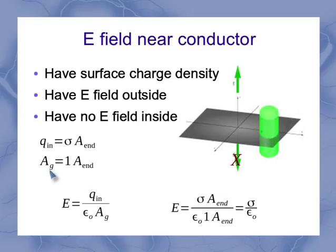But now my Gaussian area, well, before I had both the top and the bottom had electric flux going through it. Now only the top does. So where before, I had two times the area of the end cap, now I only have one times the area of the end cap. When I plug that into my Gauss's law, my area of the end cap disappears, but I end up with sigma over epsilon naught.